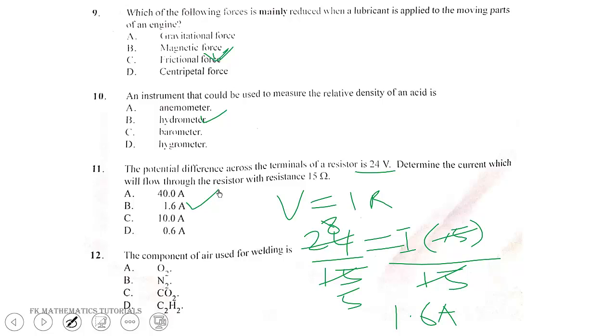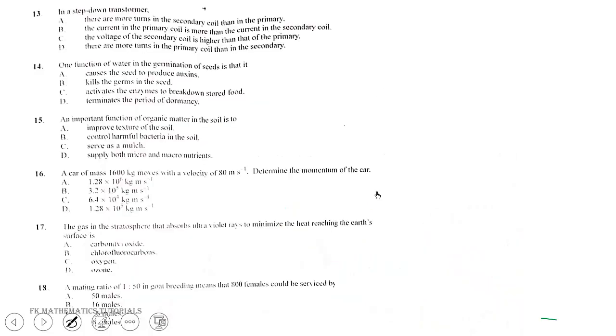Question 12. The component of air used for welding is dioxygen or oxygen gas. The correct answer is option A. Question 13. In a step down transformer, there are more turns in the primary coil than in the secondary. The correct answer is option D.